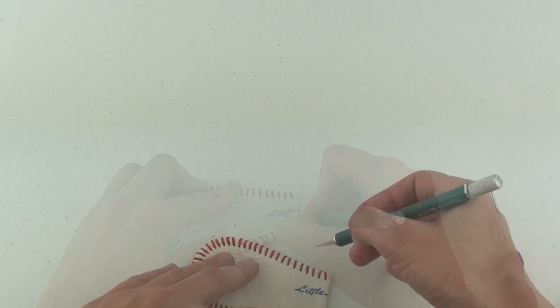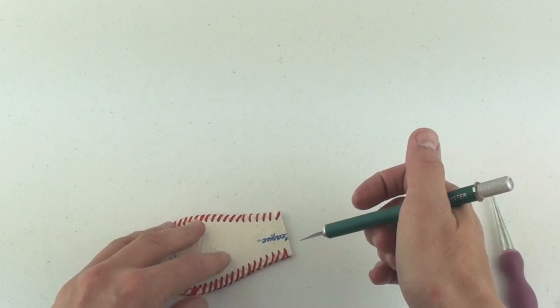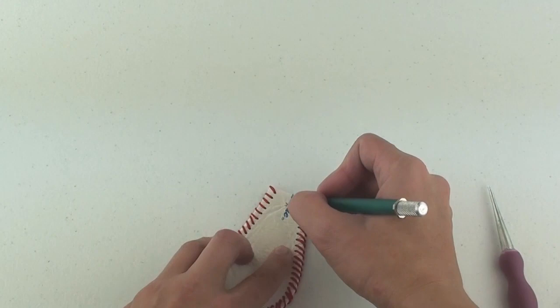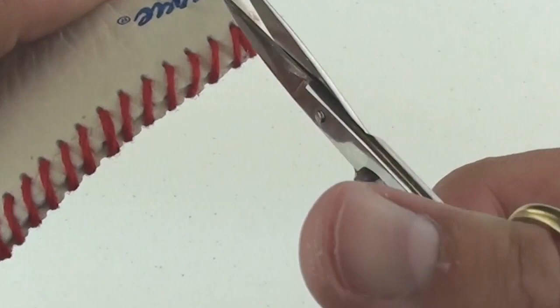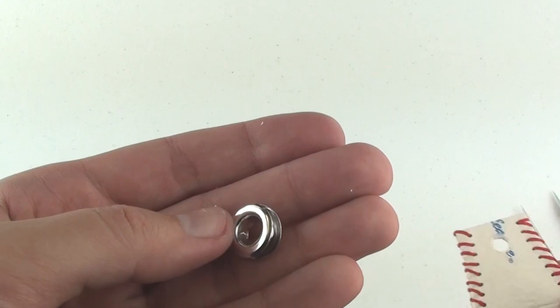Then, between the exacto knife and my sharp scissors, I continue to cut a hole out of the leather. This is what it should look like once completed. It does not need to be perfect since the grommets will hide any imperfections. However, the hole needs to be big enough to fit the grommet.